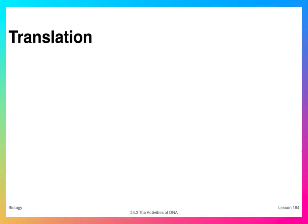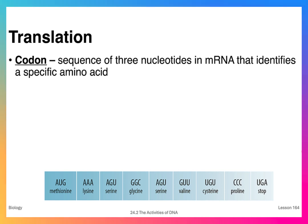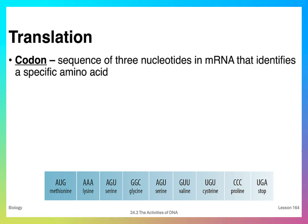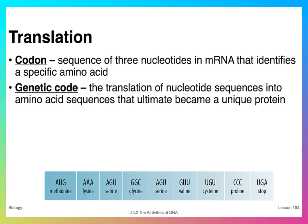The third part of the process is translation. Translation is the production of protein from an RNA molecule. Key to the genetic code is something called a codon, which is a sequence of three nucleotides on the messenger RNA. Each of these three-nucleotide sequences codes for a specific amino acid that is carried by transfer RNA. The genetic code is the translation of a nucleotide sequence of codons into an amino acid sequence, which ultimately makes up a unique protein molecule.